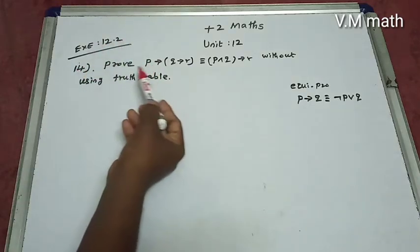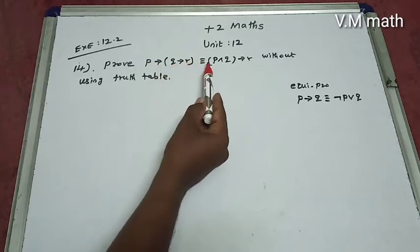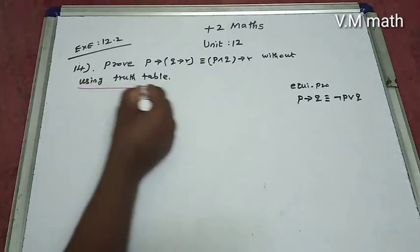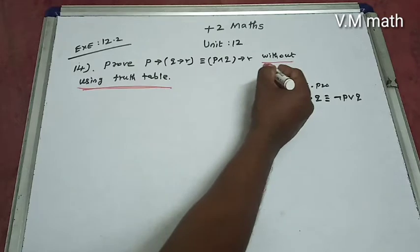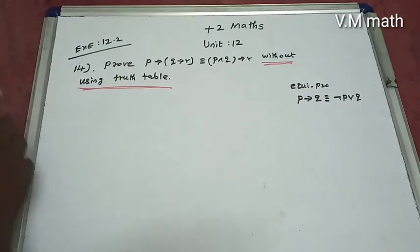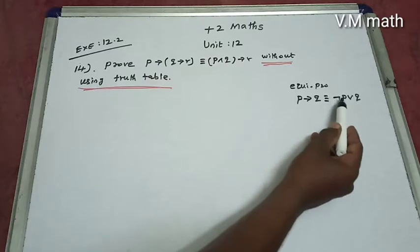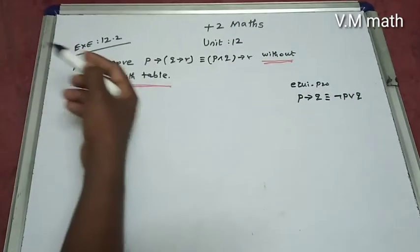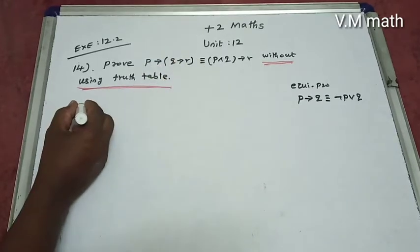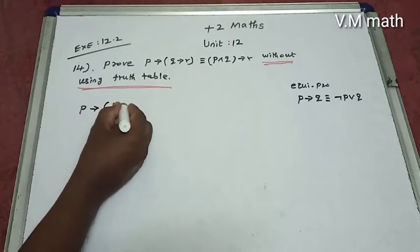XS 12.24 intuition: prove p gives q gives r is identical to p or q gives r, without using a truth table. Since truth table is not allowed, we use the equivalence property. The equivalence property states p gives q is identical to negation of p or q. Left hand side: p gives q gives r.